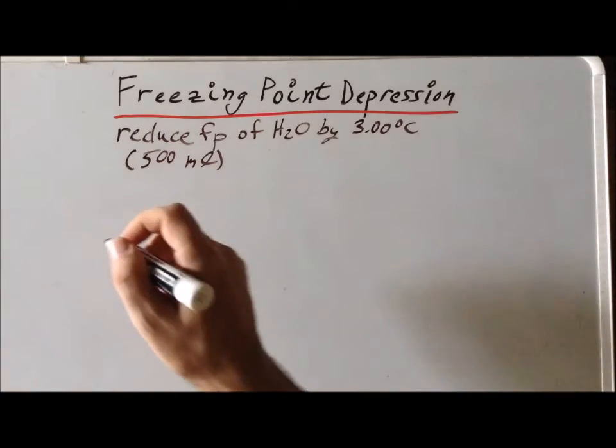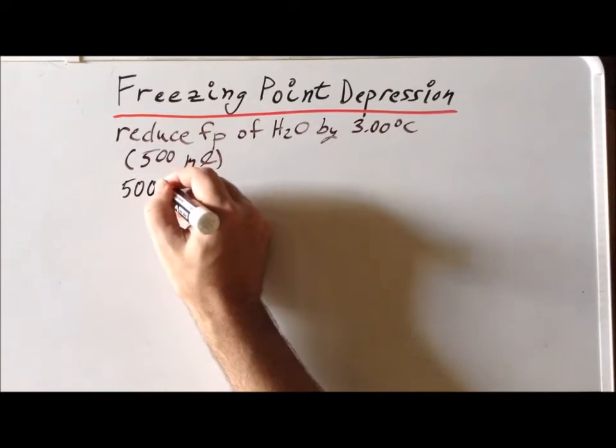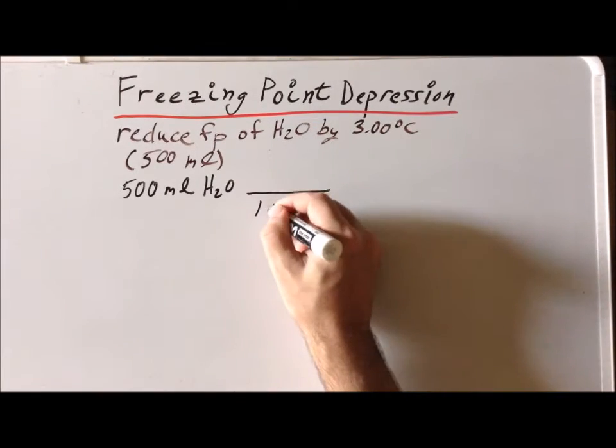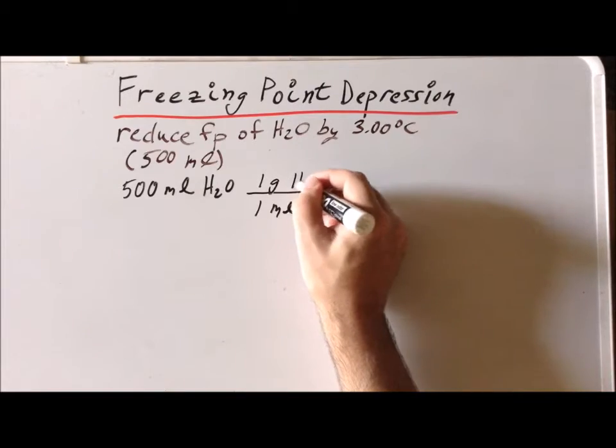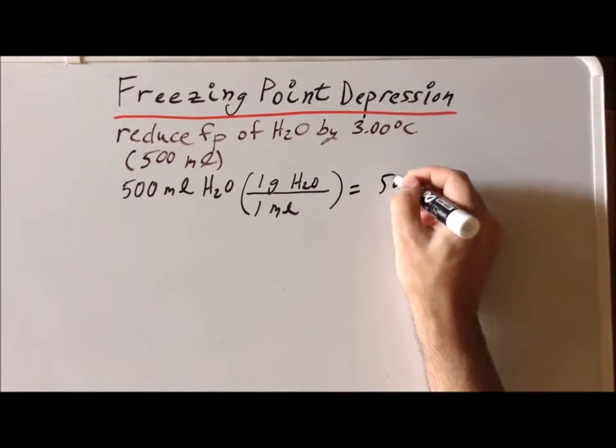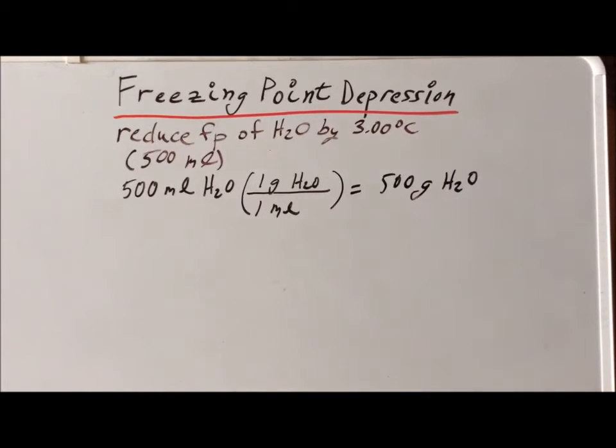Next, we recall that if we have 500 milliliters of water as our solvent, the density of water is very close to being one gram per milliliter. So this particular volume of water will have a mass of 500 grams. We always need to perform a calculation of this type when we're doing molality calculations because molality involves the mass of the solvent, not the volume of solution. That's the big difference between molality and molarity. For the freezing point depression and the boiling point elevation, we need to use the molality.